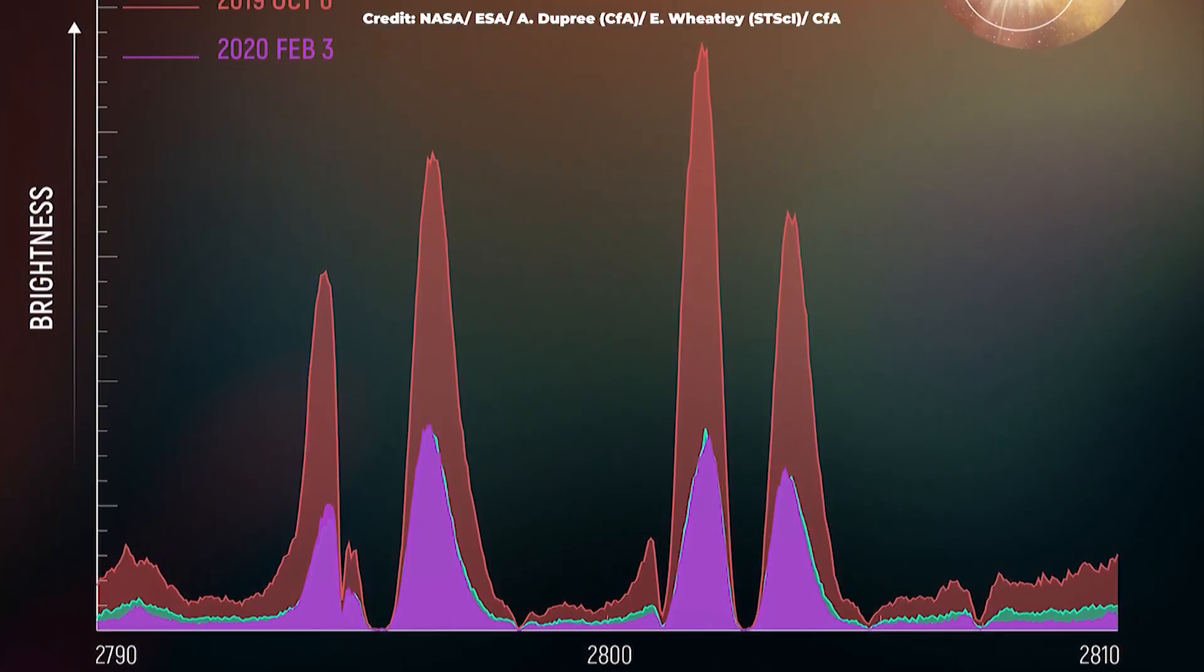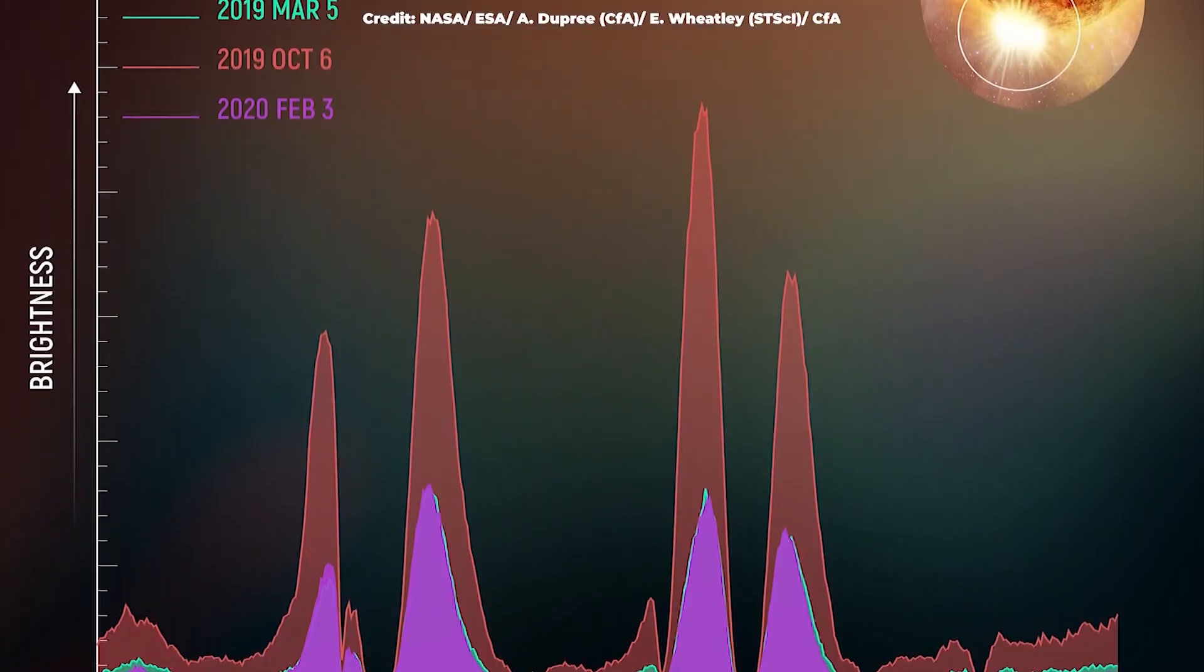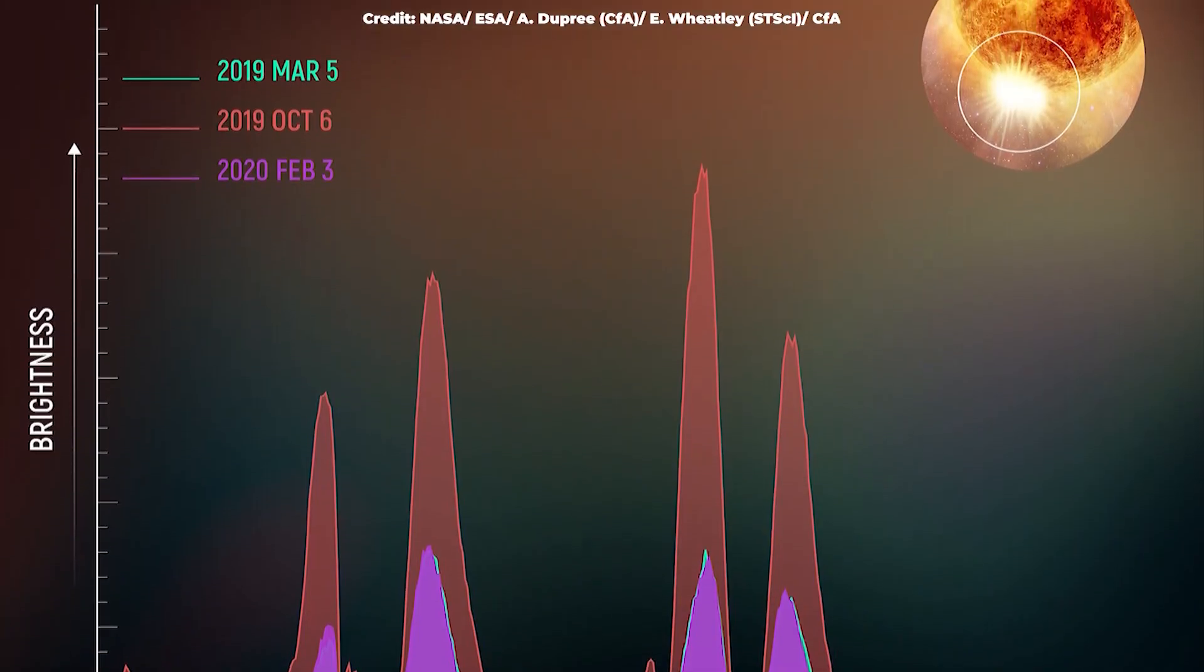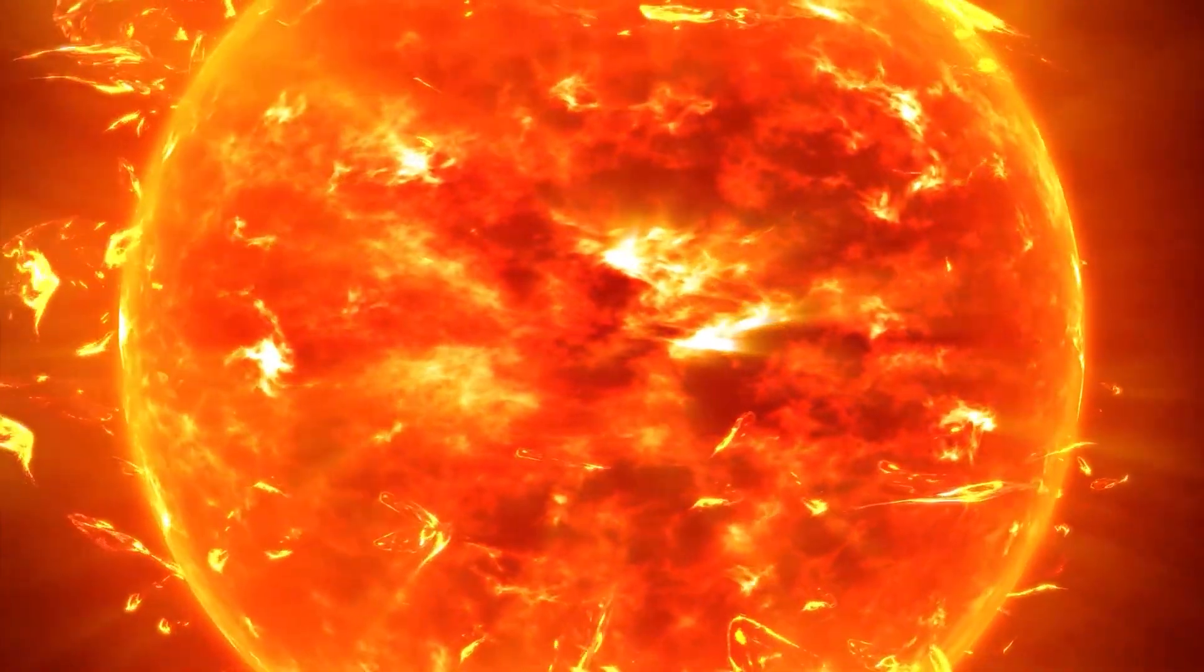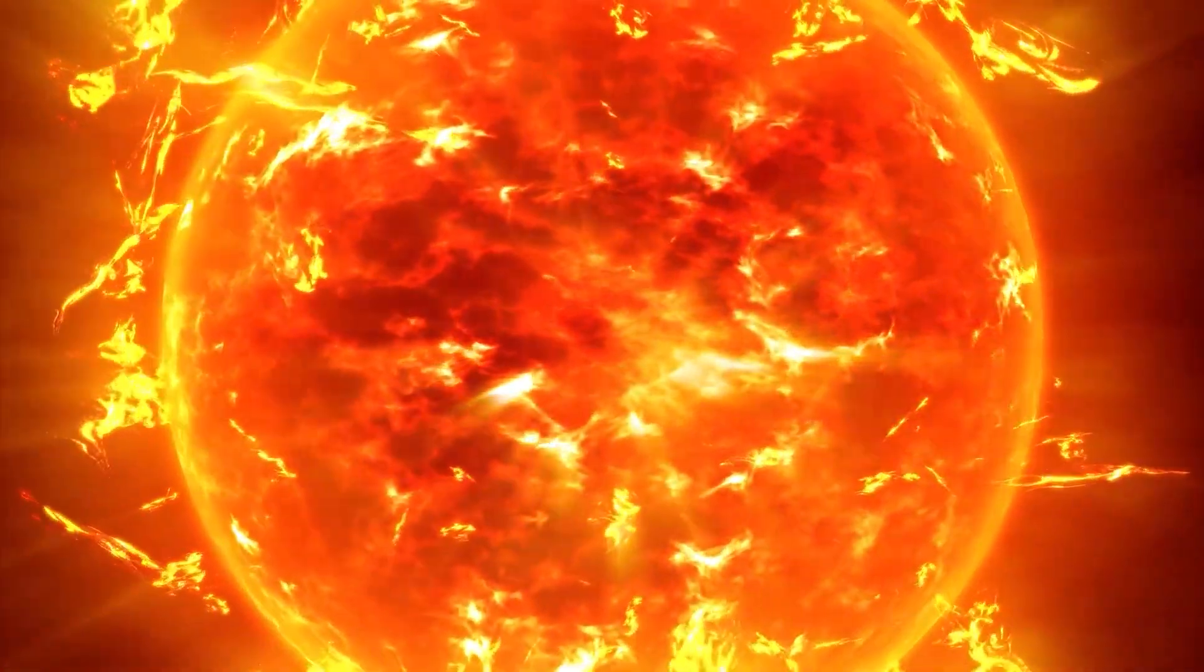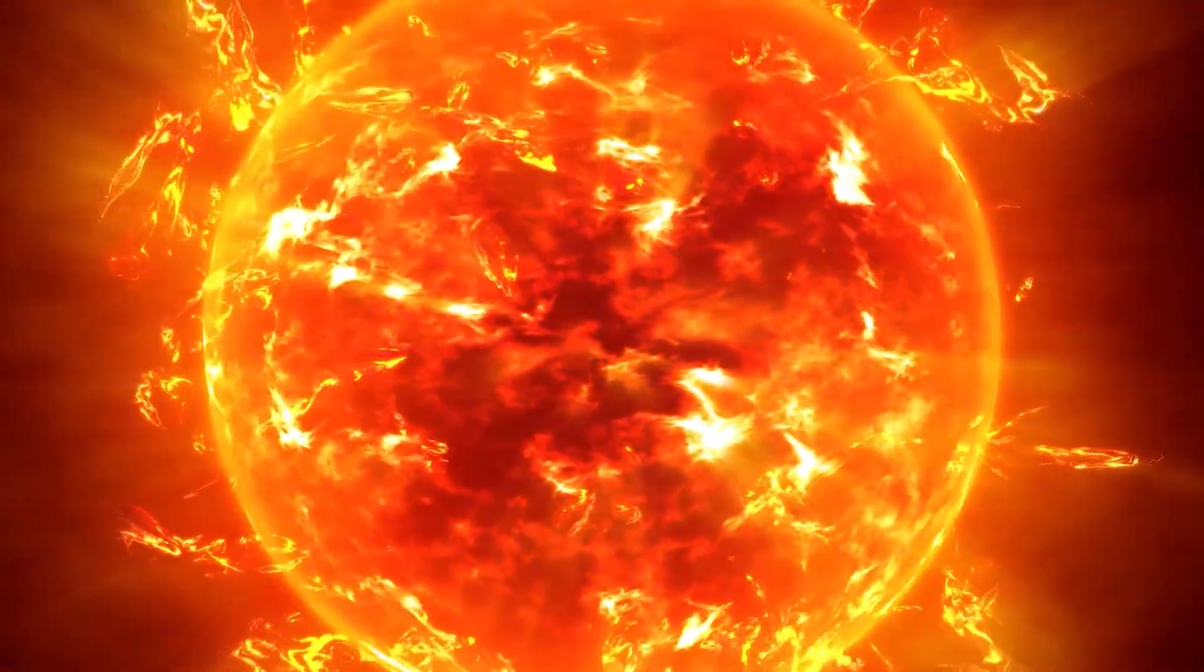This material, casting a shadow-like effect, was substantial enough to create a noticeable dip in Betelgeuse's brightness. Such events aren't uncommon for aging stars, and this ejection offered a first-hand glimpse into the volatile processes that rage within such celestial giants.